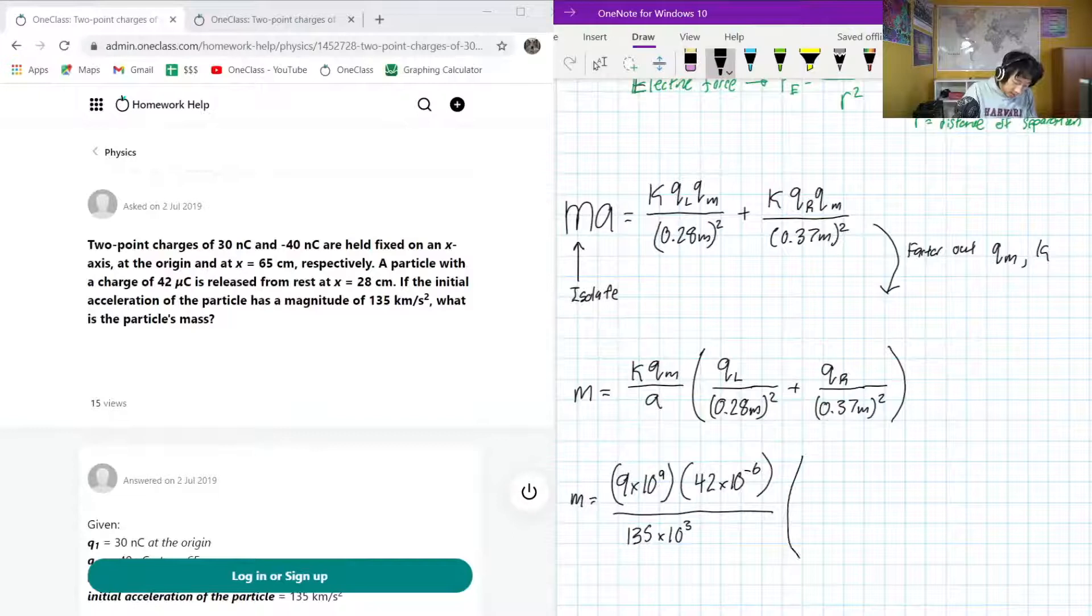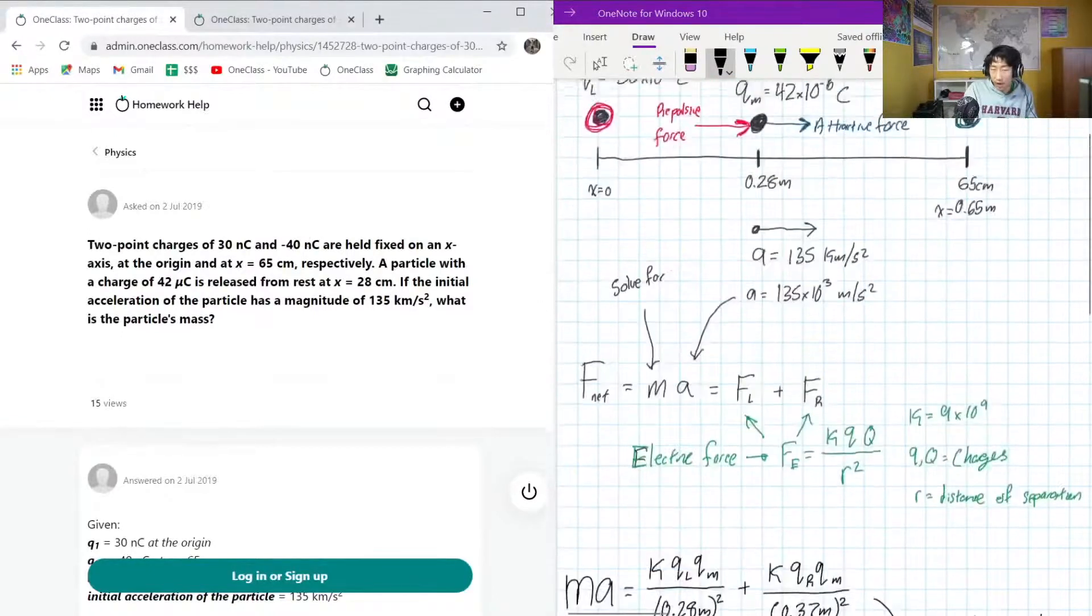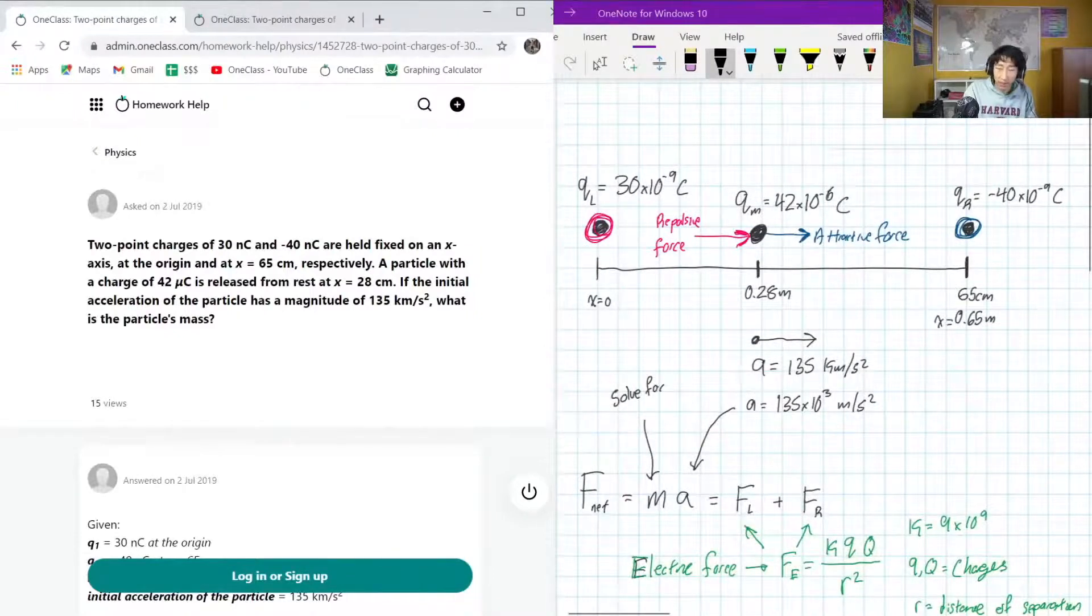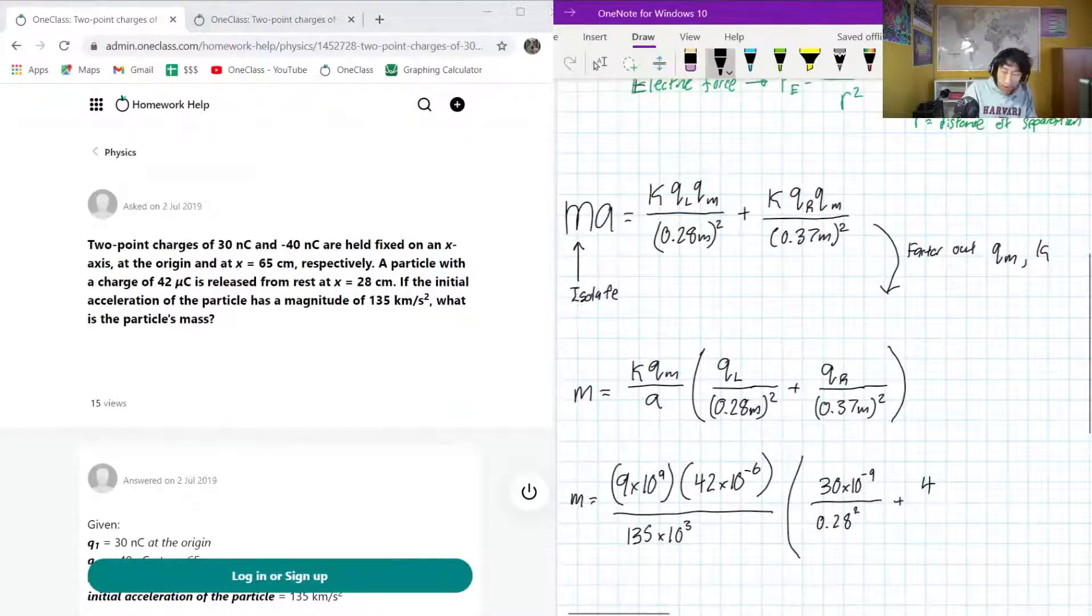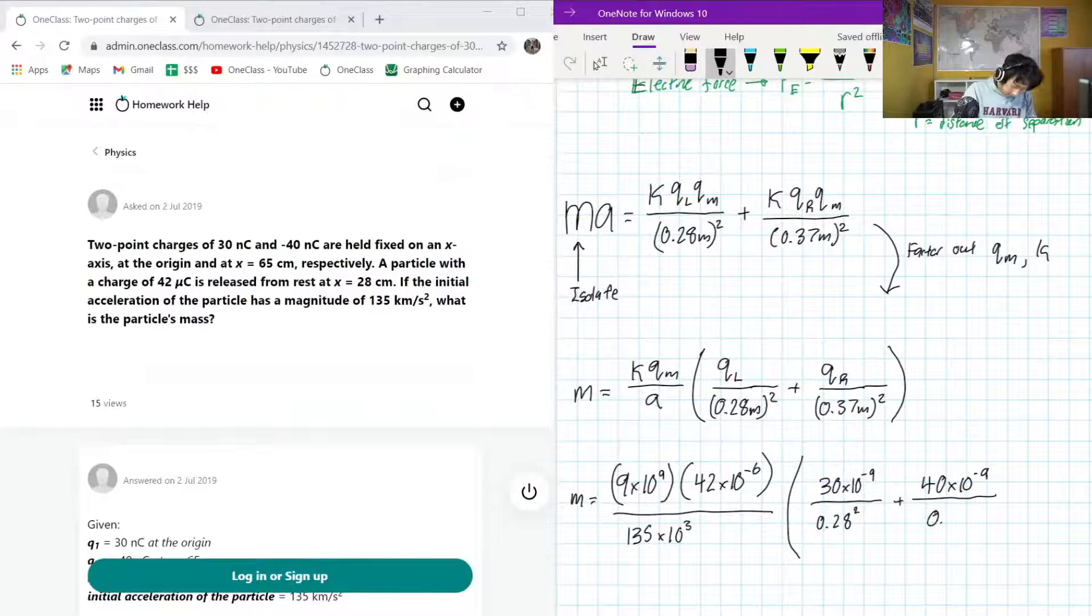All over our acceleration. And our acceleration is 135 times 10 to the 3 meters per second squared. I'm not going to write the units, because, well, it gets quite long. Our left charge is 30 times 10 to the negative 9 over 0.28 squared, plus our QR. Now, our QR is originally given as negative 40, but since we have our directions in here, we're just looking for the magnitude. So, I'm going to put in a positive value, not because this is a positive charge. It's because we already have the signs incorporated into the diagram, so we're not going to incorporate them into our calculation here.